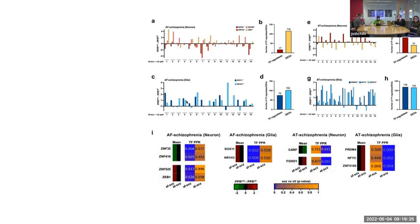Looking at the affected and untreated group, you get a very high importance for the zinc fingers, but a much lower importance after treatment. So what that implies is there's a difference in regulation between before and after treatment, and these transcription factors may be identifying networks that are regulated by the drug — in this case, in neurons.